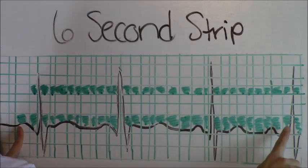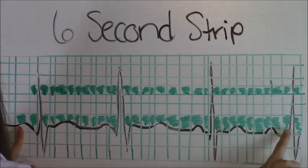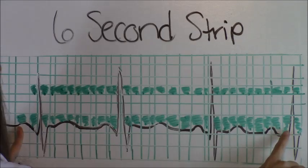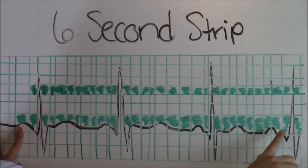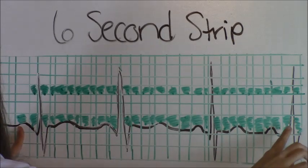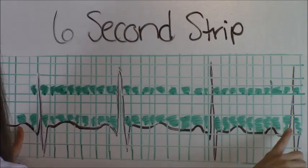So you will take that number and multiply it by 10. Four times 10 is 40. So we have an atrial rate of 40, which is slow. It's sinus brady because the normal atrial rate is 60 to 100.